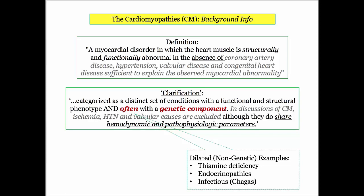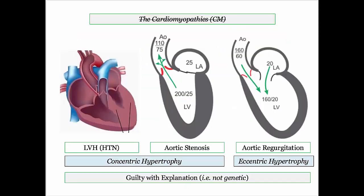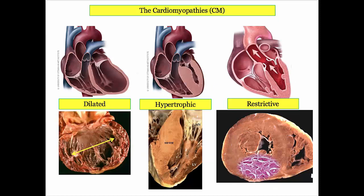To conclude this background: disorders classified as dilated cardiomyopathy that are not genetically acquired do exist, with Chagas being a pretty classic example. Examples such as LVH and valvular heart disease share pathophysiologic features but are unclassified as cardiomyopathies — I'd describe them as being guilty with an explanation. That distinction made me nuts when I started with this topic.